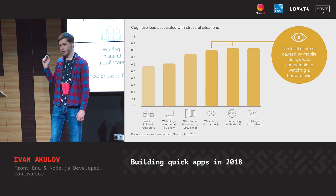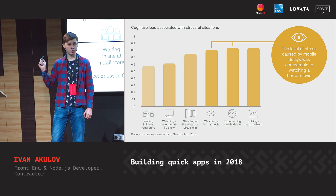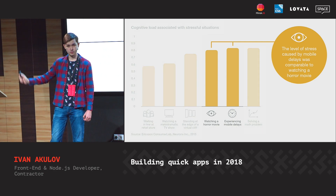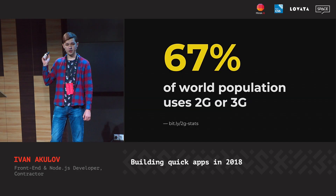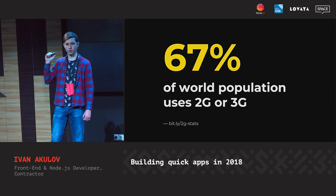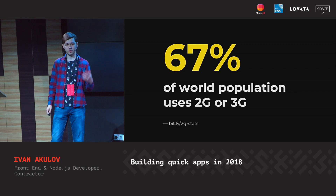Slow sites are extremely stressful. When a user experiences a slow site on mobile, they have the same stress as if they were watching a horror movie. And third, lots of your users still use a slow connection. Two-thirds of the world still use 2G or 3G. If your app doesn't work on at least a slow 3G, you lose those users.